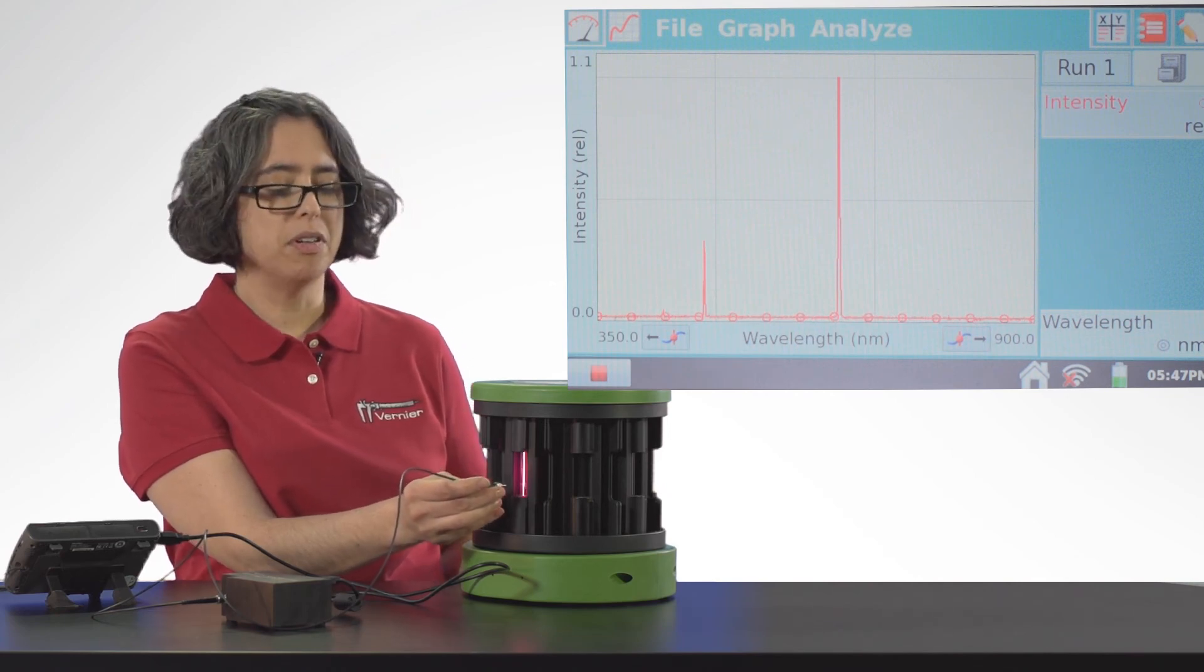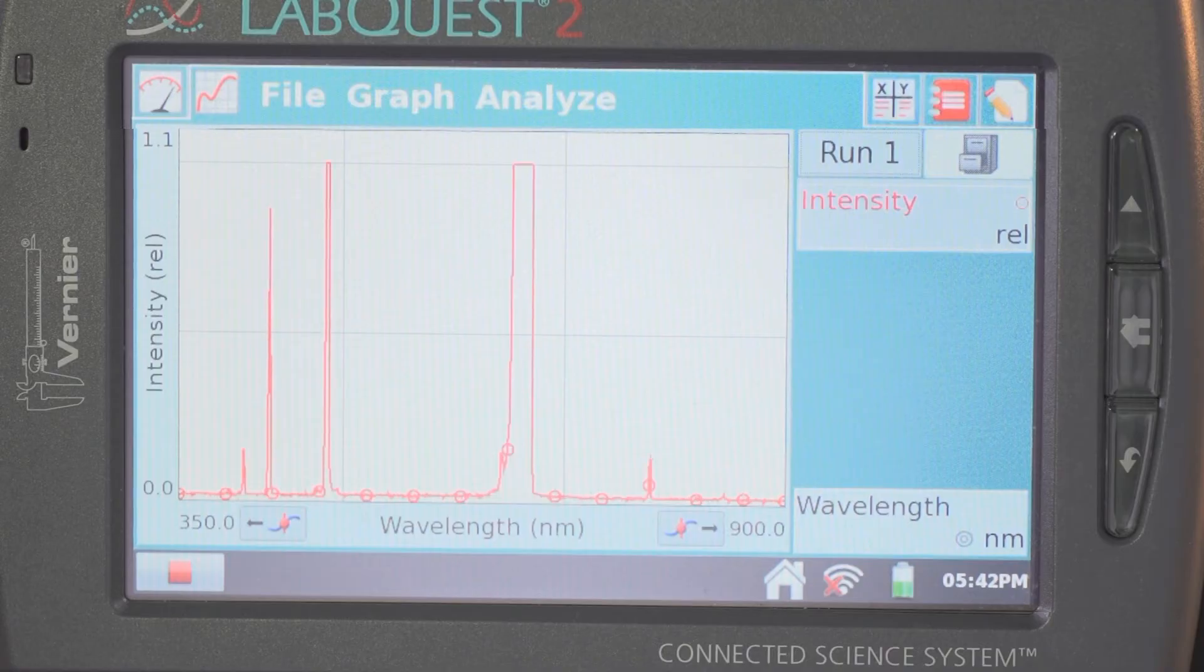I have to move the fiber closer to the spectrum tube to get precise measurements for the less intense shorter wavelength Balmer line emissions.